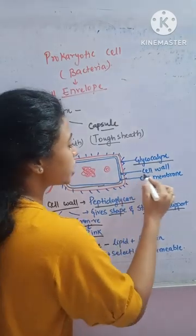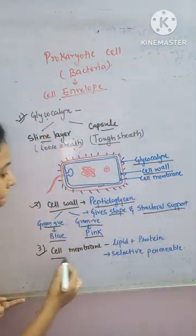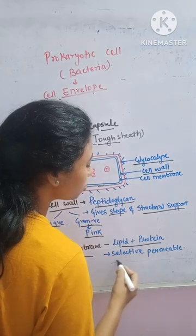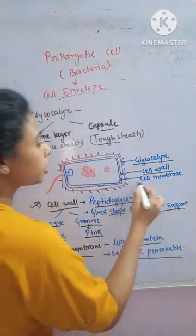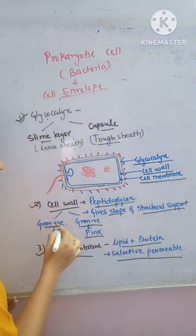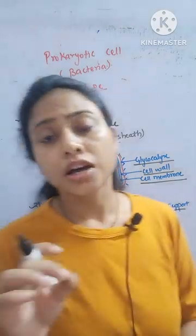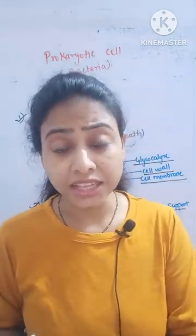Below it, you can see the cell wall. And at last, the cell membrane, which is made of lipid and protein and is selectively permeable. The inner one is the cell membrane. This gram staining technique was given to us by Christian Gram.